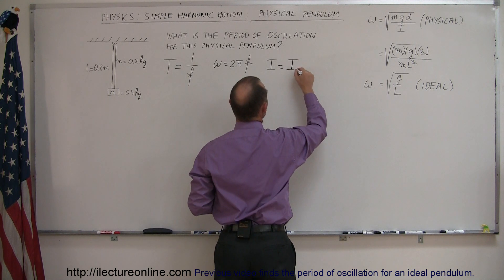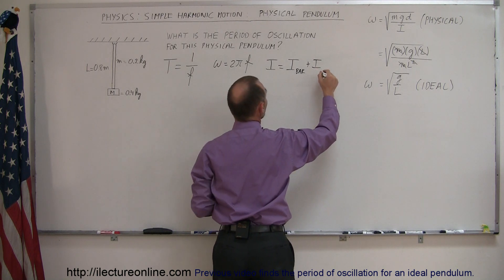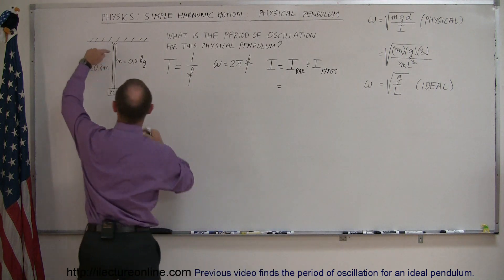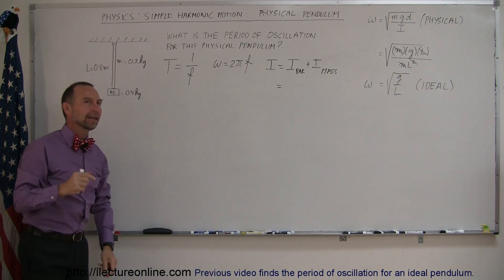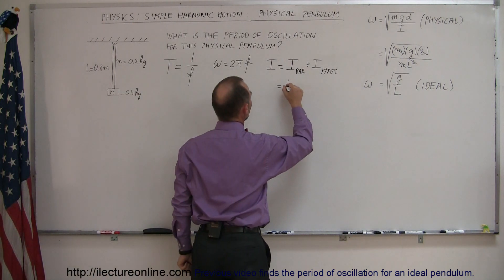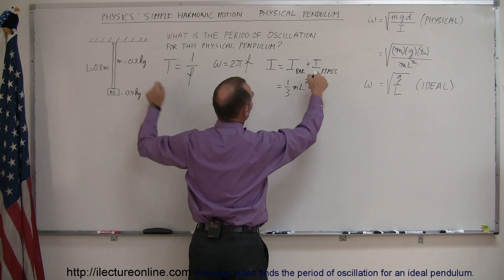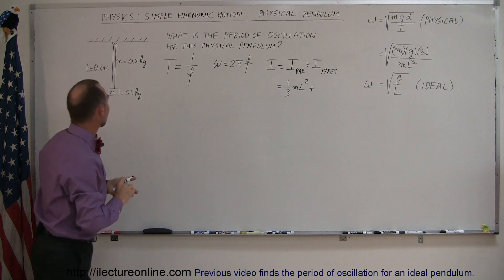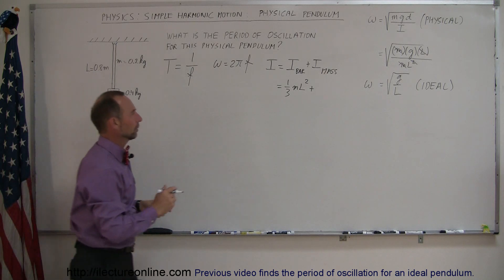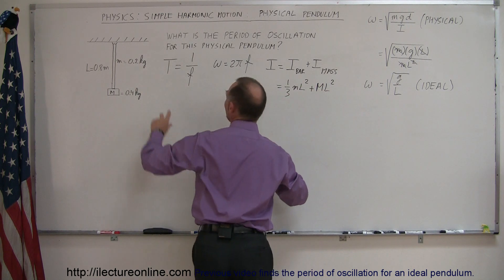So that's I of the bar plus I of the mass at the end. The moment of inertia of a bar oscillating at its end is one-third mL squared. That's one-third times the bar's mass — we'll call it little m — times the length squared. Plus the moment of inertia of the mass at the end, which is a point mass, so that's ML squared — big M times L squared. That's the moment of inertia of this pendulum.